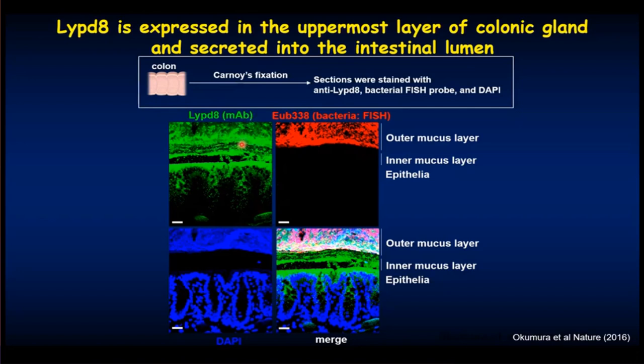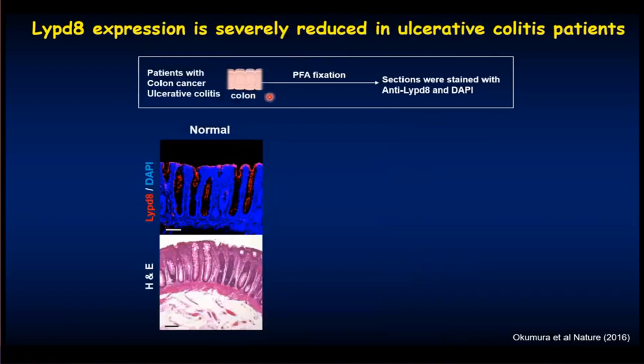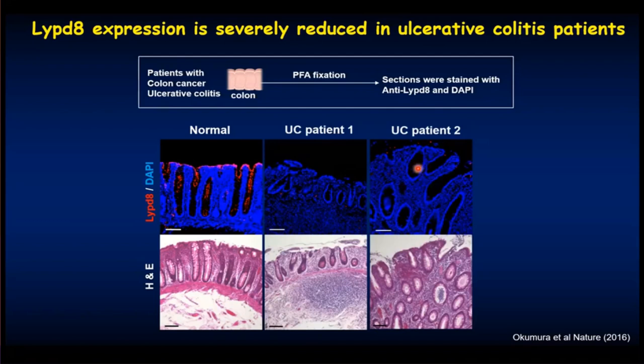This is the case for the mouse colon. We then analyzed the human colon, which was fixed with a classical PFA fixation method, so luminal contents were washed out. When we examined LYPD-8 expression, it was found to be highly expressed in the uppermost layer of the colonic gland. But when we analyzed ulcerative colitis patients, LYPD-8 protein expression was severely reduced. Thus, LYPD-8 protein expression well correlates with the pathogenesis of ulcerative colitis.